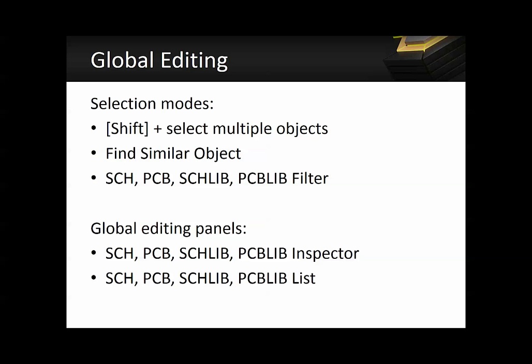You can use the schematic, the PCB, the schematic library, or the PCB library inspector to globally change the properties for all the objects. Or, if you'd like to perform it in a tabular form which lists down all the objects that are selected along with their properties, you would then make use of the schematic, PCB, schematic library, or PCB library list panel.